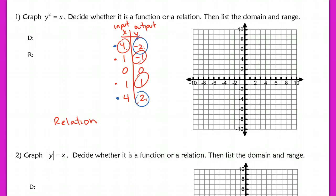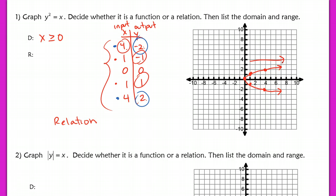We can still graph this. We have the points (4, −2), (4, 2), (1, −1), (1, 1), and (0, 0) — we get a sideways-looking parabola. This is the graph of a relation. The domain: we couldn't plug in any negative values, so the domain is x ≥ 0. For the range, this goes forever to positive and negative infinity, so the range is all reals.